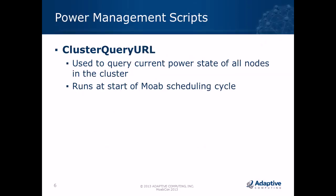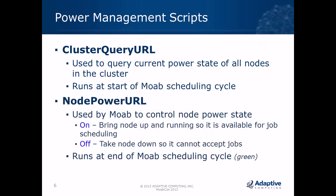The first power system job is defined with a parameter known as cluster query URL. This is used by Moab to query the current power state of all the nodes in the cluster. Moab runs it at the start of a scheduling cycle — if you've defined this URL for a power resource manager, Moab will run it at the time when it queries all of the resource managers.